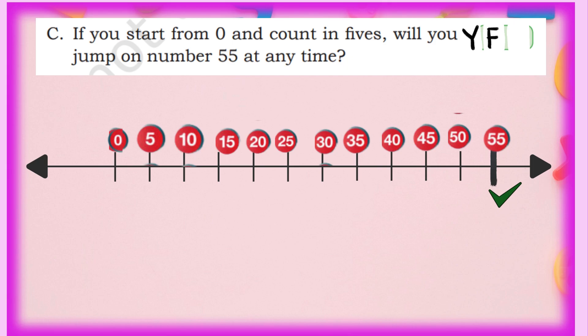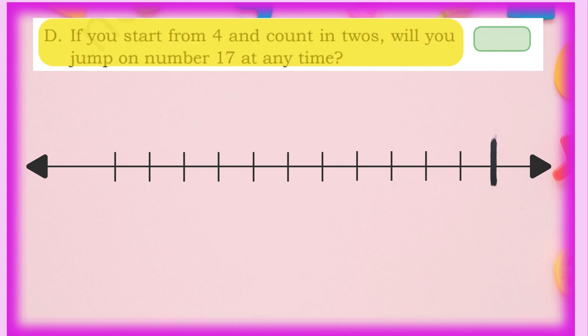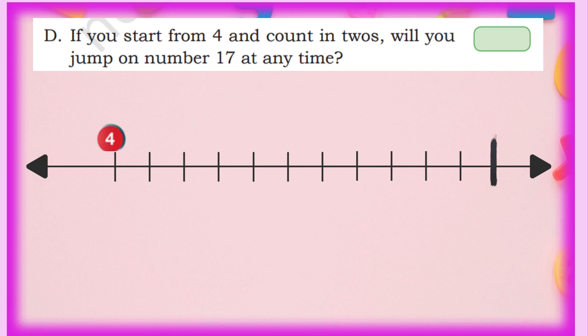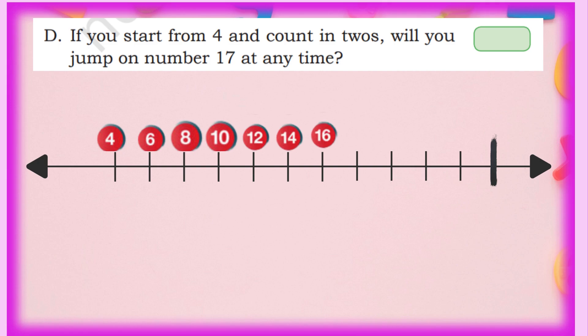Next: if you start from 4 and count in 2s, will you reach 17? Starting at 4 and adding 2 each time: 6, 8, 10, 12, 14, 16, 18. We can see that 16 comes and then 18 — 17 is skipped entirely. So starting from 4 and counting in 2s, 17 will never appear. The answer is No.